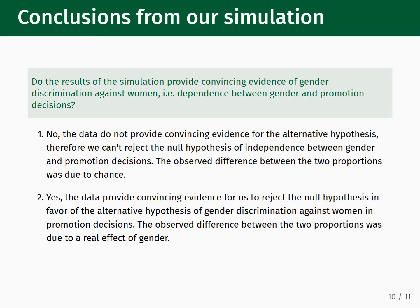Having established that 97.7% of our simulations based on a random chance model produced outcomes less extreme than our experimental result, we can now address the question: do the results provide convincing evidence of gender discrimination against women, i.e., dependence between gender and promotion decisions? There are two possible conclusions. Option one: the data do not provide convincing evidence for the alternative hypothesis, so we can't reject the null hypothesis — the observed difference was due to chance. Option two: the data provide convincing evidence to reject the null hypothesis in favor of the alternative — the observed difference was due to a real effect of gender. Based on our analysis, option two is our conclusion.